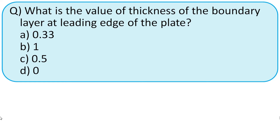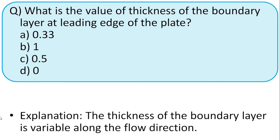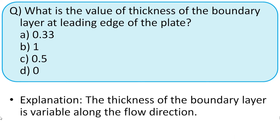What is the value of boundary layer thickness at the leading edge of the plate? Options: 0.331, 0.5, and 0. Recall that at the leading edge, the boundary layer thickness is always 0. So the right option is option D.